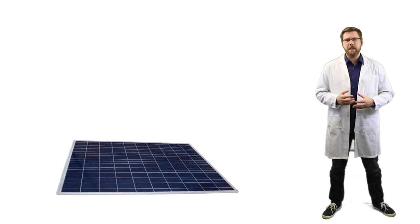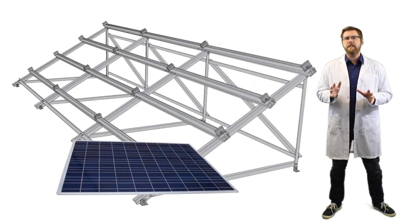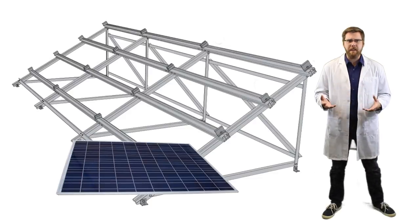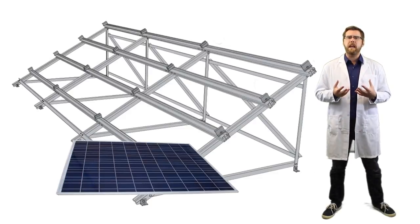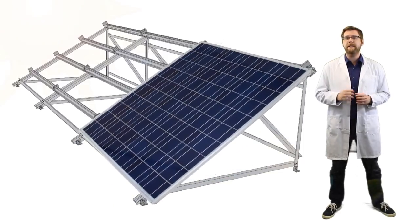Modules need to be supported when they're installed in the field. There's plenty of wind loading and snow loading to account for, and racking systems are what accomplish this. Racking systems are basically just a structure made out of metal that support the modules and make sure they stay in place and oriented at the right angle towards the sun.